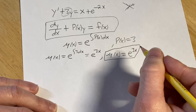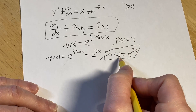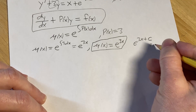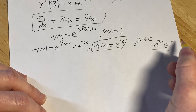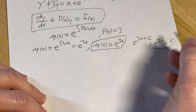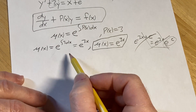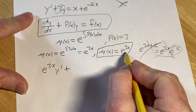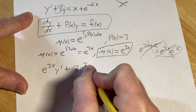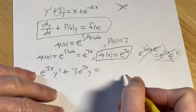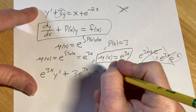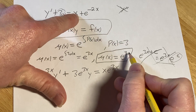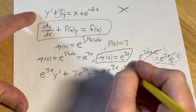We're going to multiply the whole differential equation by the integrating factor. So we get e to the 3x times y prime, plus 3e to the 3x times y, equals x·e to the 3x plus e to the 3x times e to the negative 2x. When you multiply those exponentials you add the exponents: 3x plus negative 2x gives x, so it becomes e to the x. Here's where the magic happens — this is where everyone gets confused.